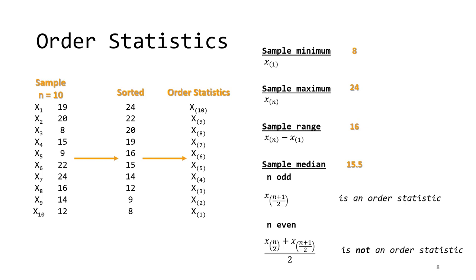If we renumber the observations, where 1 is the smallest and n is the largest, and n is the number of observations in our sample, we get the order statistics. Order statistics are differentiated by putting their rank index in parentheses. If you see x subscript 1 in parentheses, that means the smallest observation or the sample minimum. x subscript n in parentheses is the sample maximum. For this sample, x sub 1 is 8 and x sub n is 24.